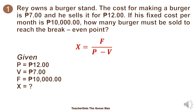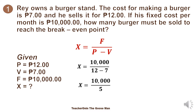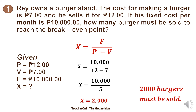We will use the formula X is equal to F all over P minus B. Then we will plug in the given numbers, such that I have 10,000 divided by 12 minus 7. But 12 minus 7 is equal to 5, so X is equal to 10,000 divided by 5, so X is equal to 2,000. Therefore, 2,000 burgers must be sold in order to break-even.